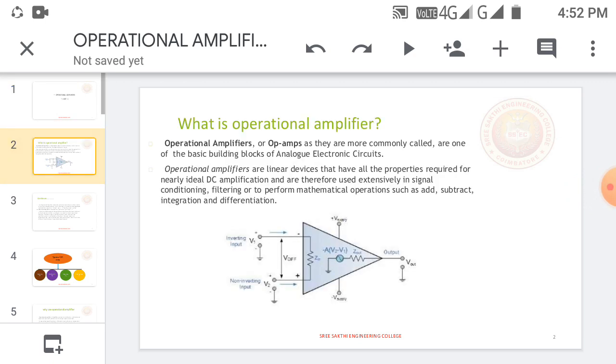Op-Amp is a high gain DC amplifier. Basically, it is used as the basic building block of analog electronic circuits.